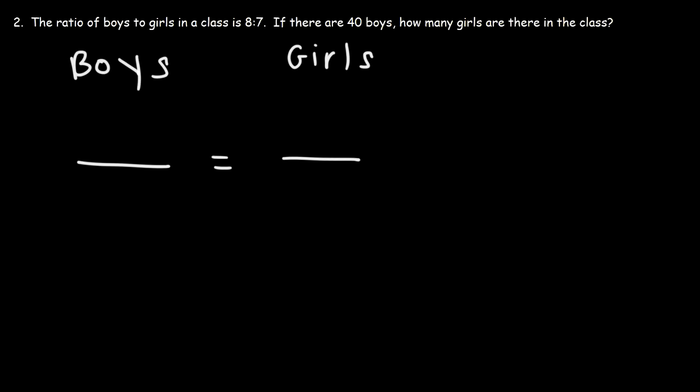Now the ratio of boys to girls is 8 to 7. So that means that if there are 8 boys in the class, there's going to be 7 girls in that same class. Now if there's 40 boys in the class, how many girls or x will be in that same class? So this is the formula that we need to solve.